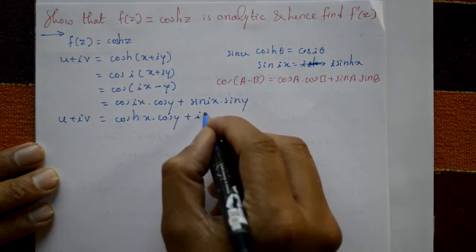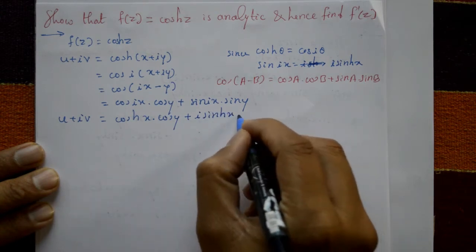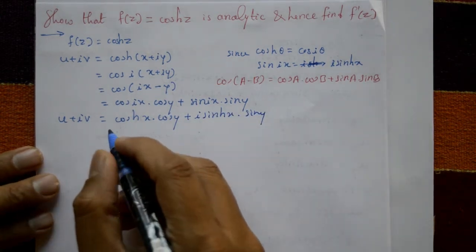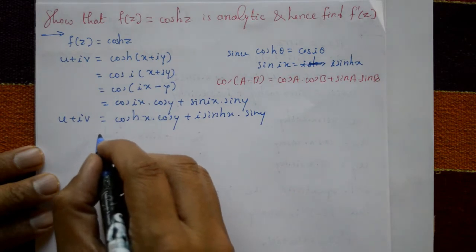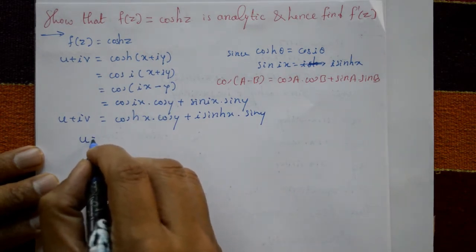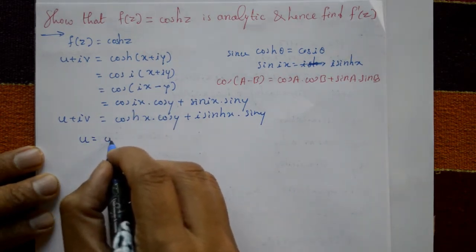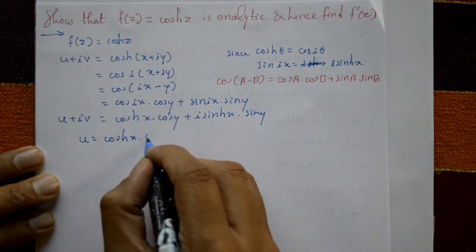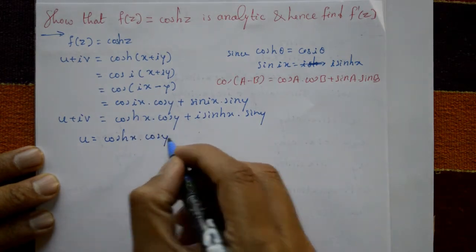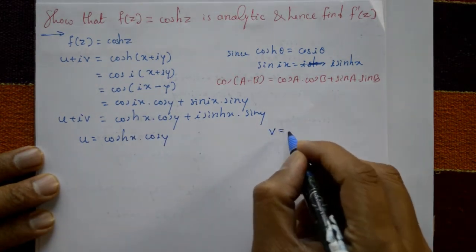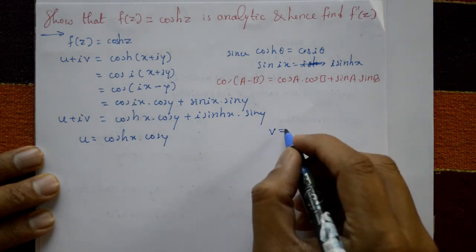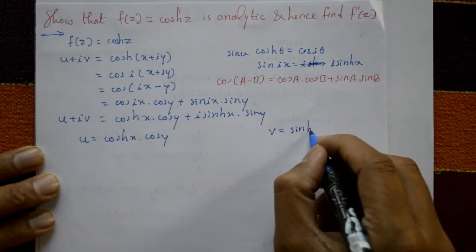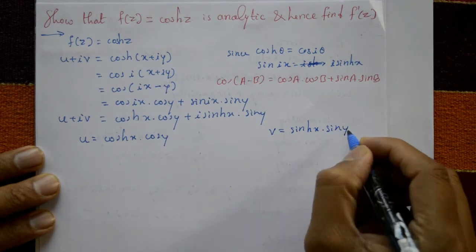So we get cosh(x)·cos(y) + i·sinh(x)·sin(y). Separating real and imaginary parts: u = cosh(x)·cos(y) and v = sinh(x)·sin(y).